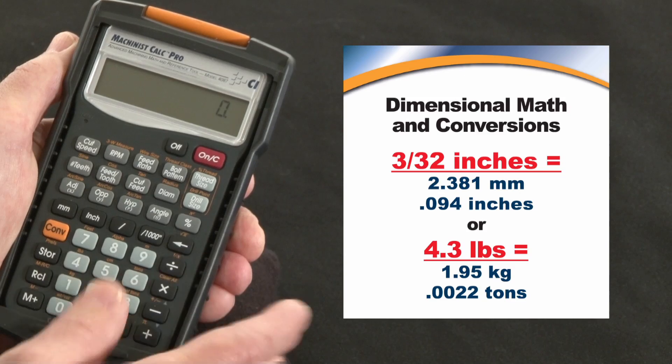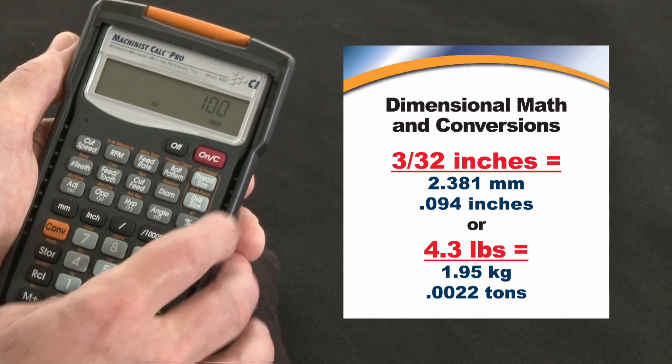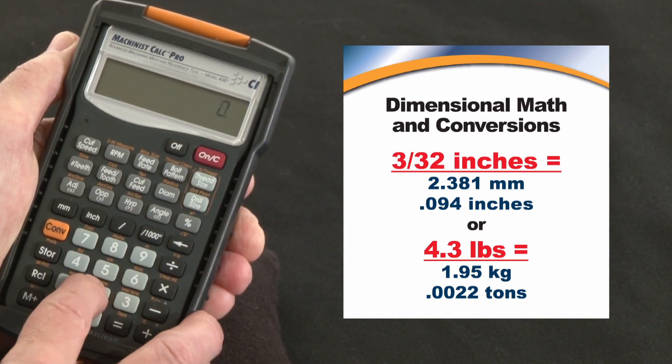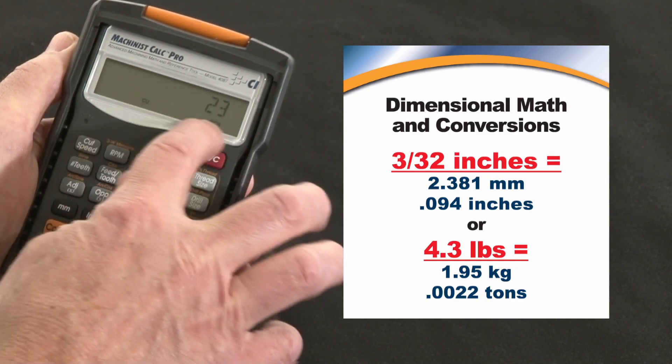You can also enter directly. If you know that you've got, for instance, 100 square inches of a particular material, you can enter it that way. Or if you know you have 23 cubic inches, you can enter it that way.